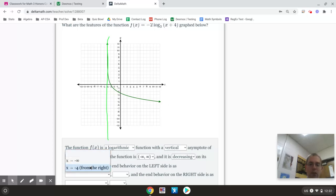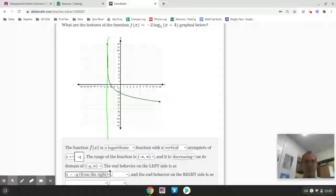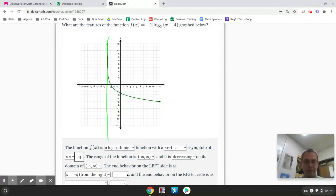So, the best description of what it does on the left side is it goes to negative 4. And it goes up toward infinity because you can see as it goes to negative 4, it's going up toward infinity.